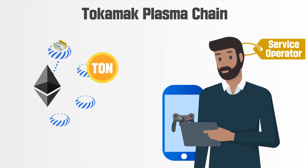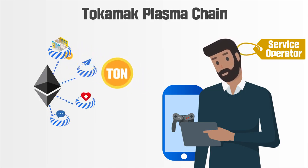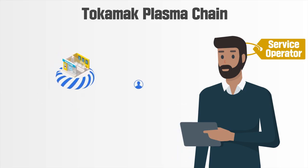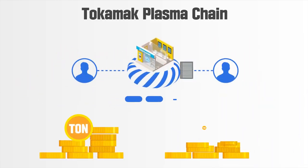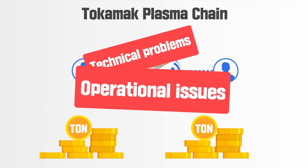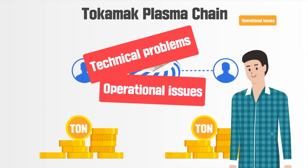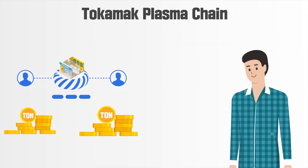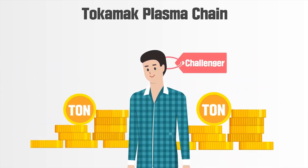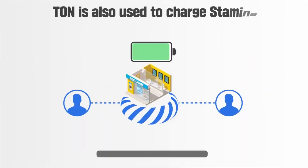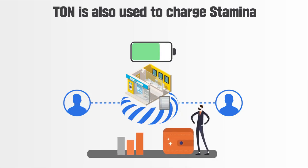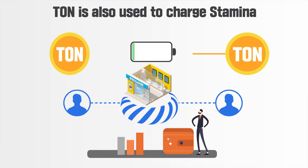The service operator must deposit TAN to open a Tokamak plasma chain. If the chain runs properly, the deposit will gradually increase. However, if there is any issue with the chain and someone finds the problem, the deposit as a reward will go to that challenger. Moreover, TAN is also used to charge stamina, which is the transaction fee in the Tokamak plasma chain. This stamina will be recharged after a certain period and does not disappear until it is withdrawn.